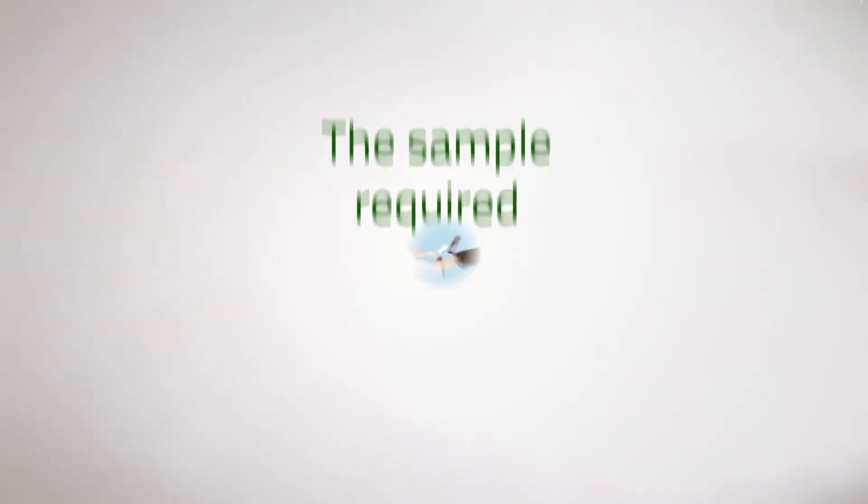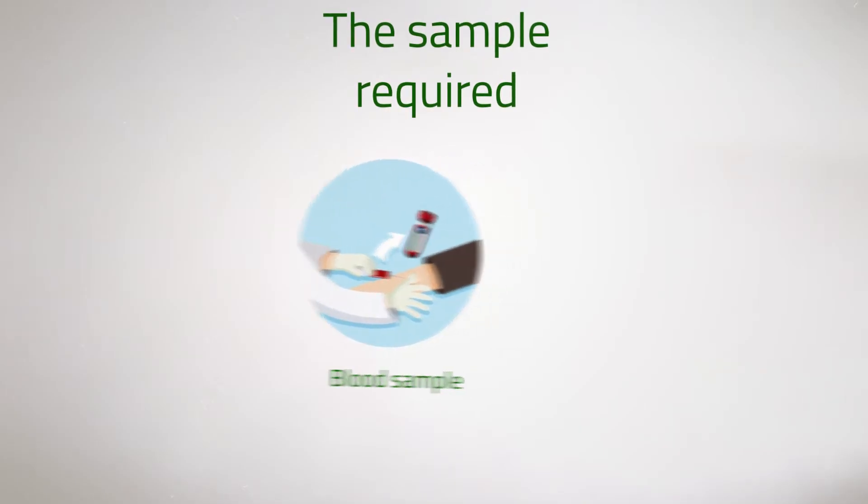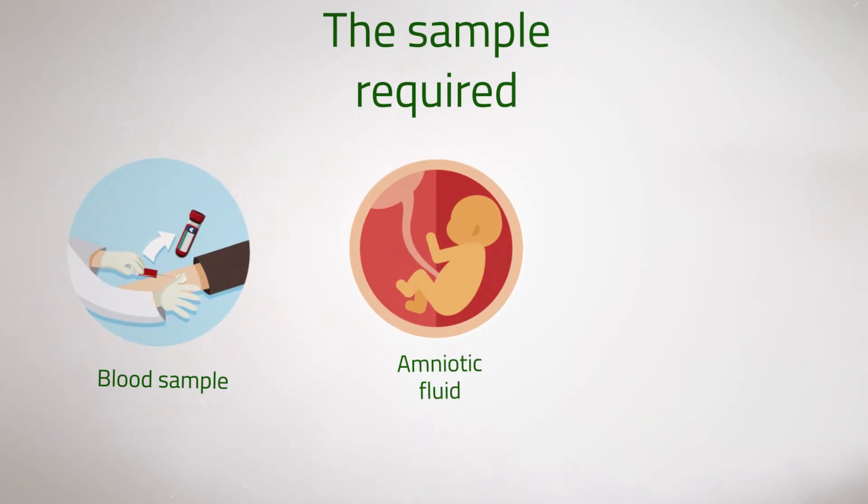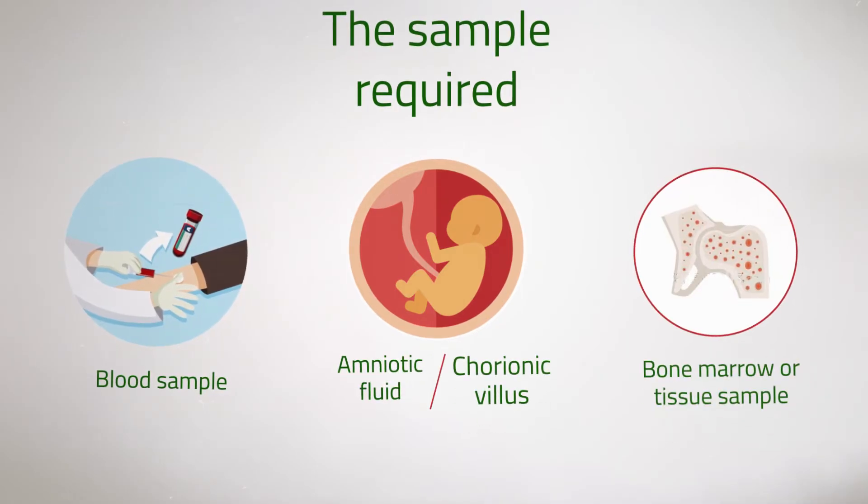The sample required for this test includes a blood sample drawn from a vein in your arm, or a sample of amniotic fluid or chorionic villus from a pregnant woman, or a bone marrow or tissue sample.